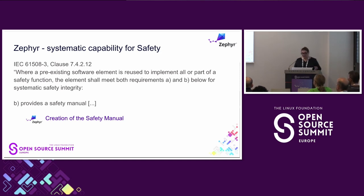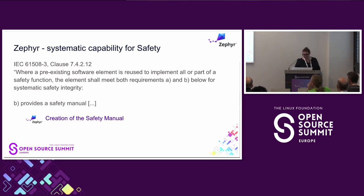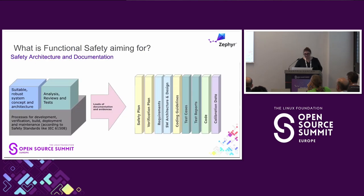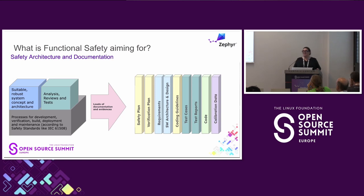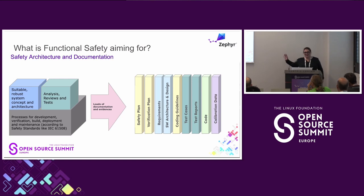The last point in clause 7.4.2.13 is that the justification for use of the element shall be valid only for those applications with respect to the assumptions made in the safety manual. We already talked about it — there will be one. In functional safety, what we're doing is creating a lot of paper trail or evidences. For Zephyr, we create planning documents, add information to the docs, create the safety plan, requirements management plan, configuration management plan, tool qualification plan, and all associated evidence.